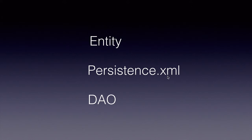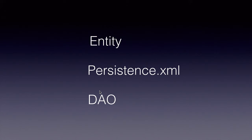Second, you come up with a persistence.xml, which is the configuration file for JPA within which you can define the database and several other things. Finally, you create a DAO class which performs database CRUD operations using the JPA API. This is similar to Hibernate where you created a POJO, a Hibernate configuration file, and then a DAO class.